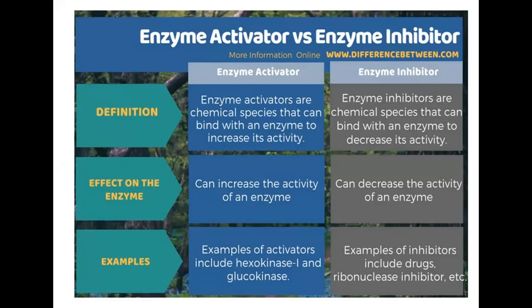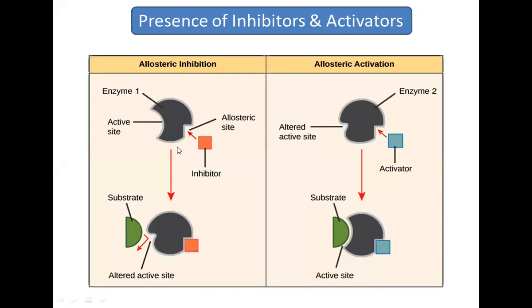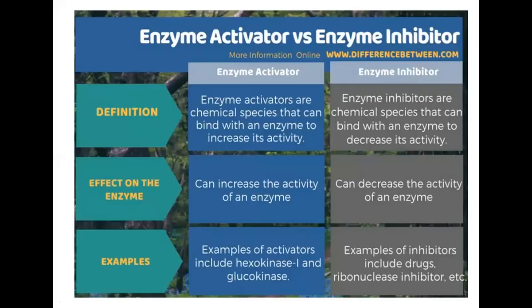Enzyme inhibitors are chemical species that bind with the enzyme to inhibit the reaction and decrease its activity. When an inhibitor binds to the inhibitor site, the conformation of the substrate changes — similar to the lock and key model, but in this case the inhibitor changes the active site so that the substrate can no longer bind. This is how the inhibitor functions to decrease enzymatic activity.